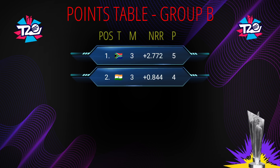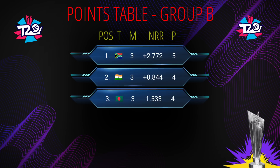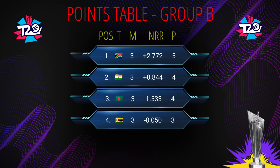Number 2 team: India, matches played 3, number of wins 2, total points 4. Number 3: Bangladesh, matches played 3, number of wins 2, total points 4. Number 4 team: Zimbabwe, matches played 3, number of wins 1, total points 3.